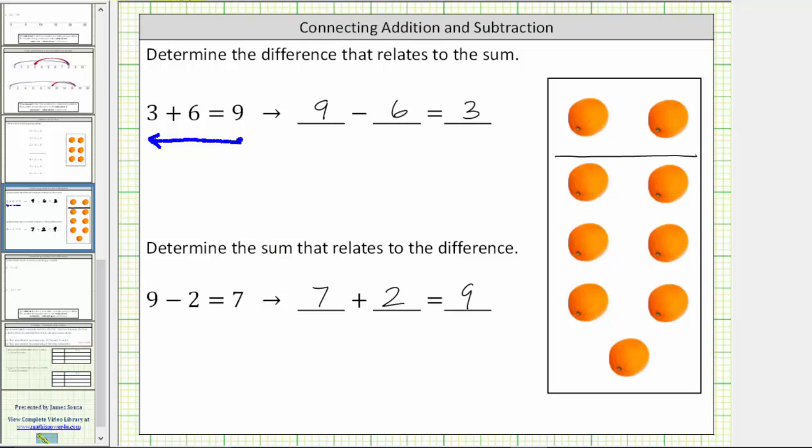And again, we use the values in the difference in the opposite direction to determine the sum. Nine minus two equals seven corresponds to the sum seven plus two equals nine.